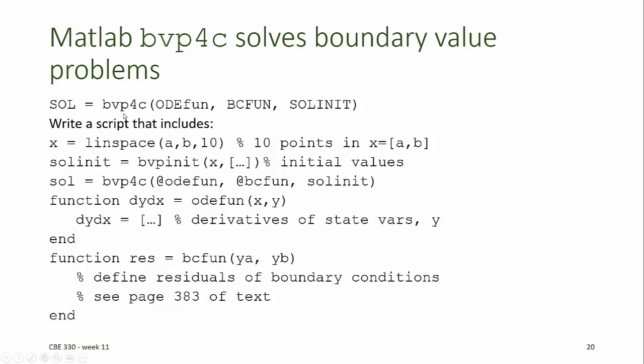To implement BVP4C, we need at least three input arguments. The first input argument is an ODE function, the second input argument specifies the residuals for the boundary conditions, and the third input argument is a required initial guess for the value of the dependent variables at each of the points in the domain.